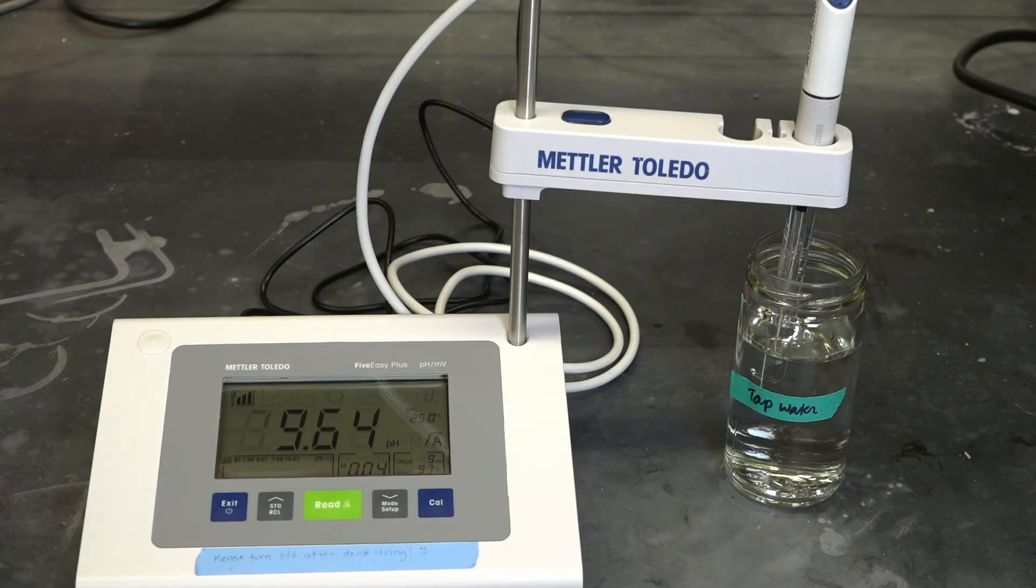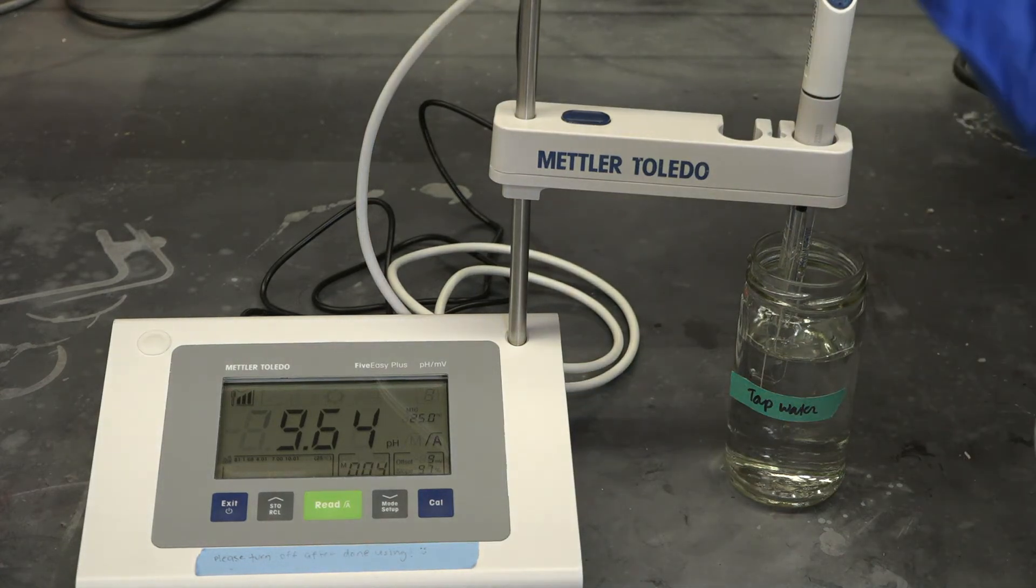And you should now be able to see the pH measurement on the display panel. In this case, it's 9.64. Wow, that's some pretty basic tap water.